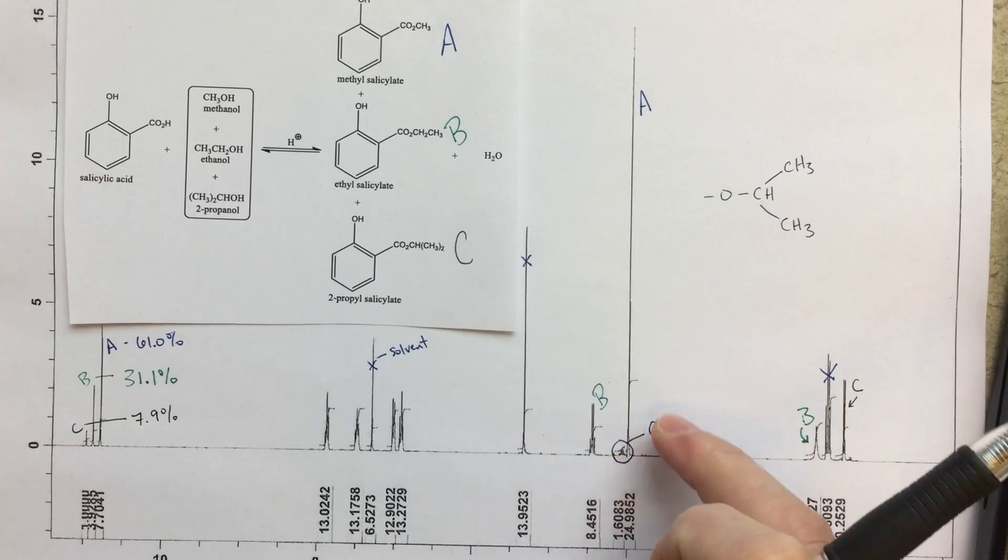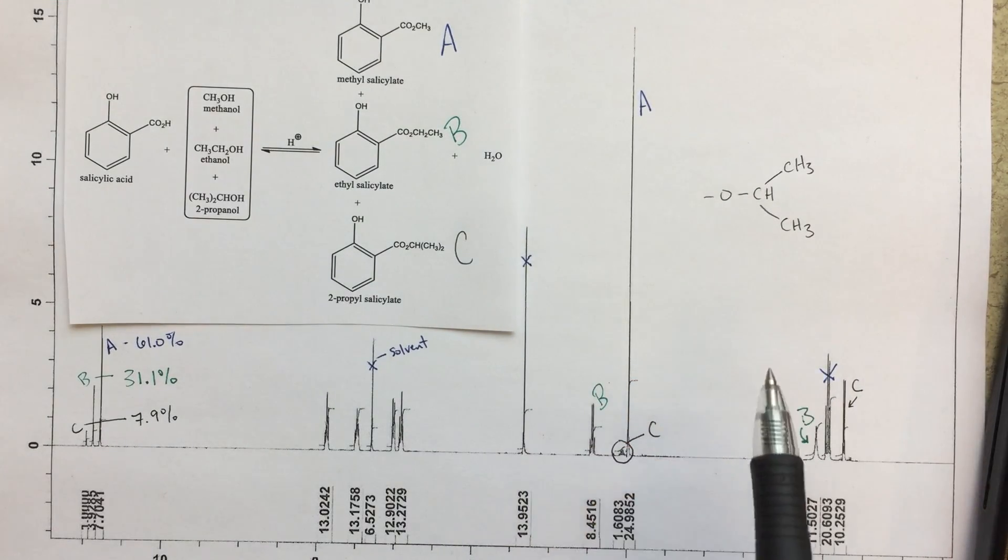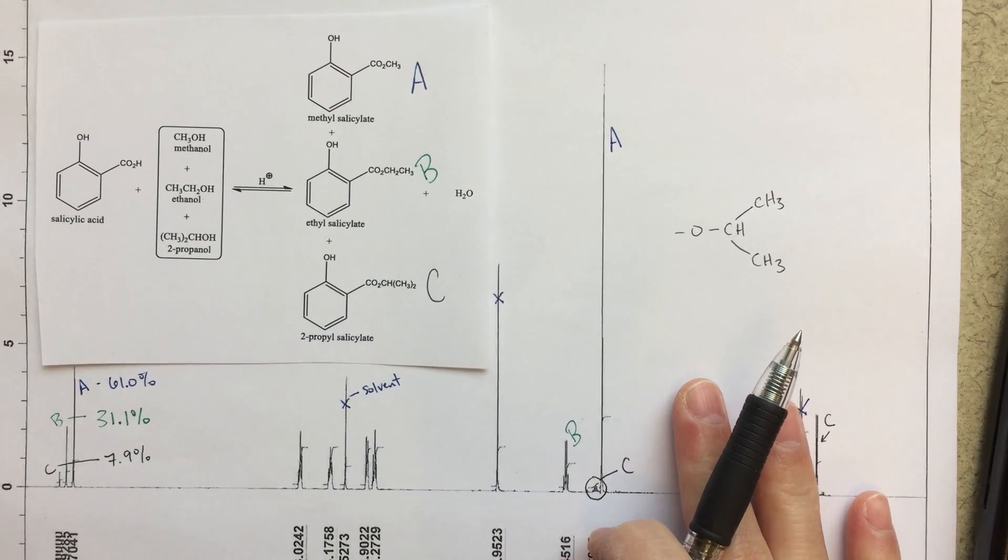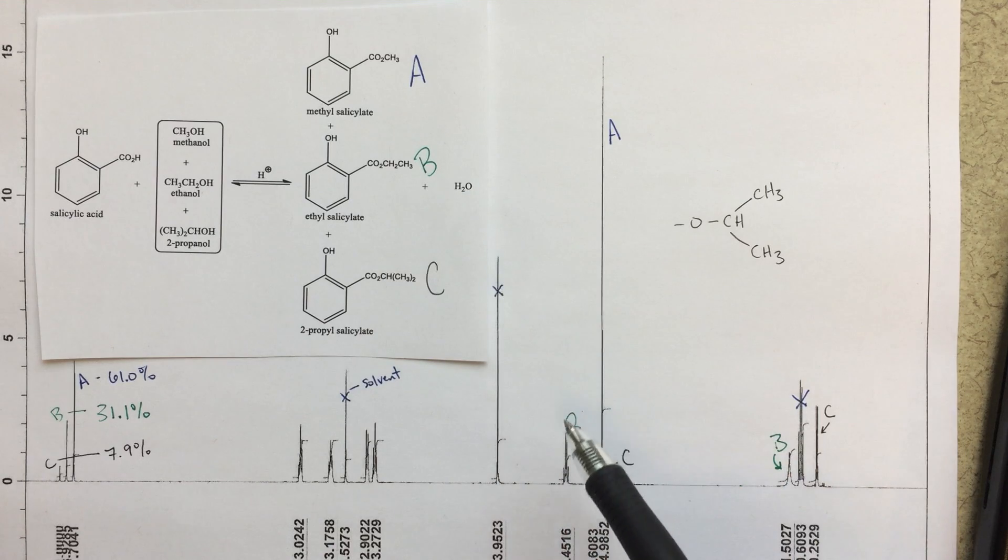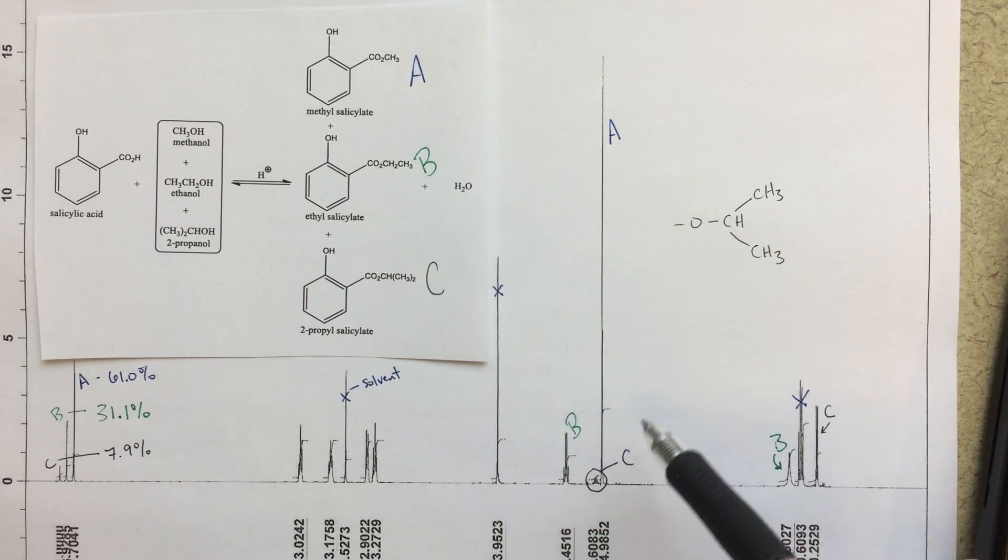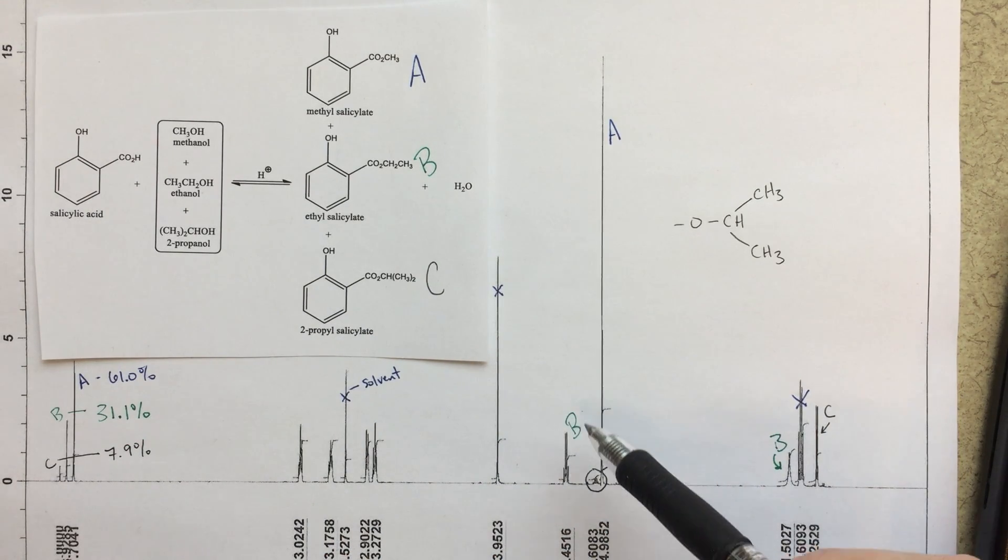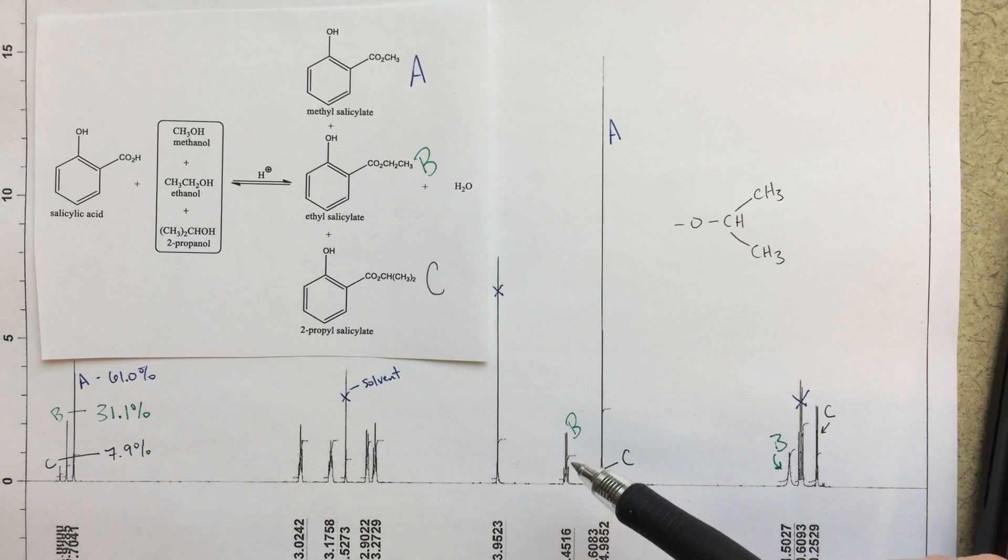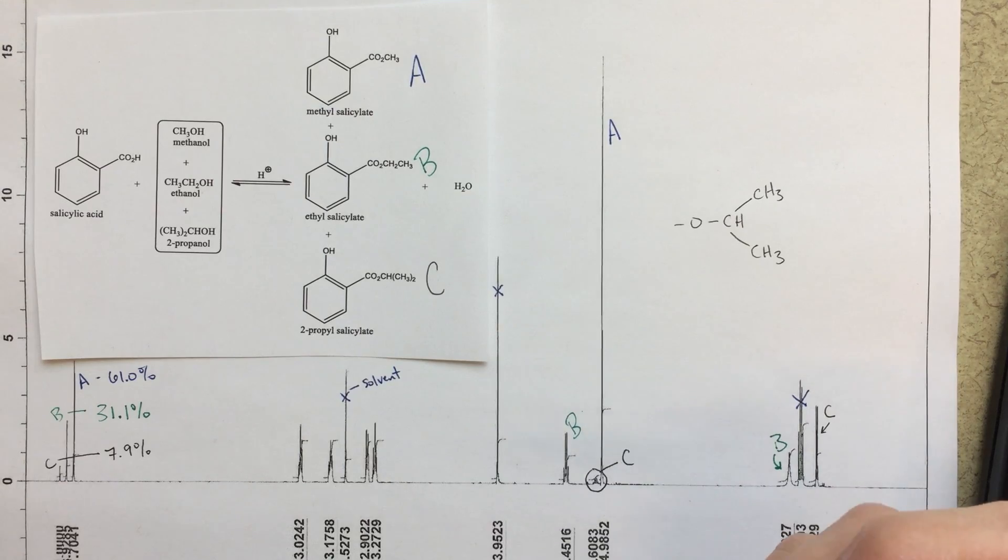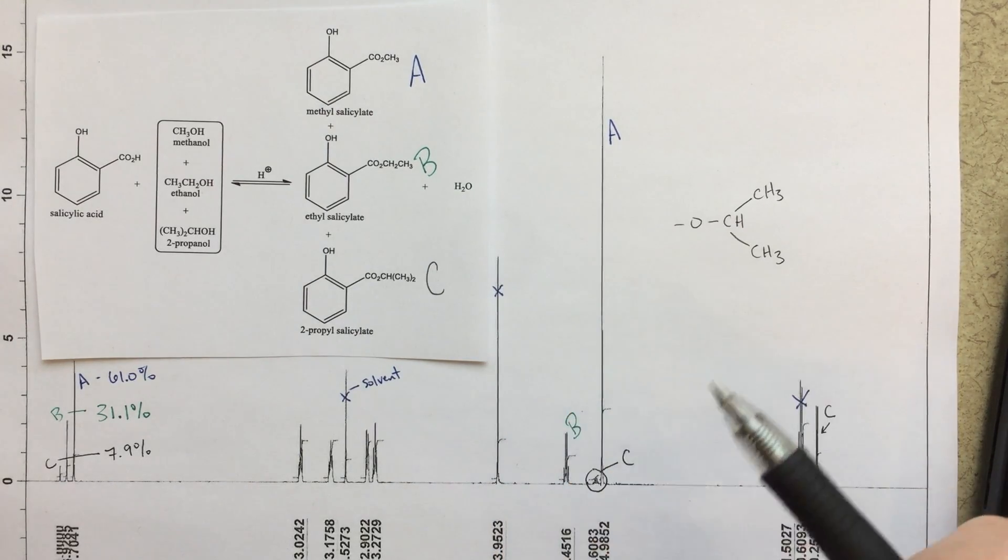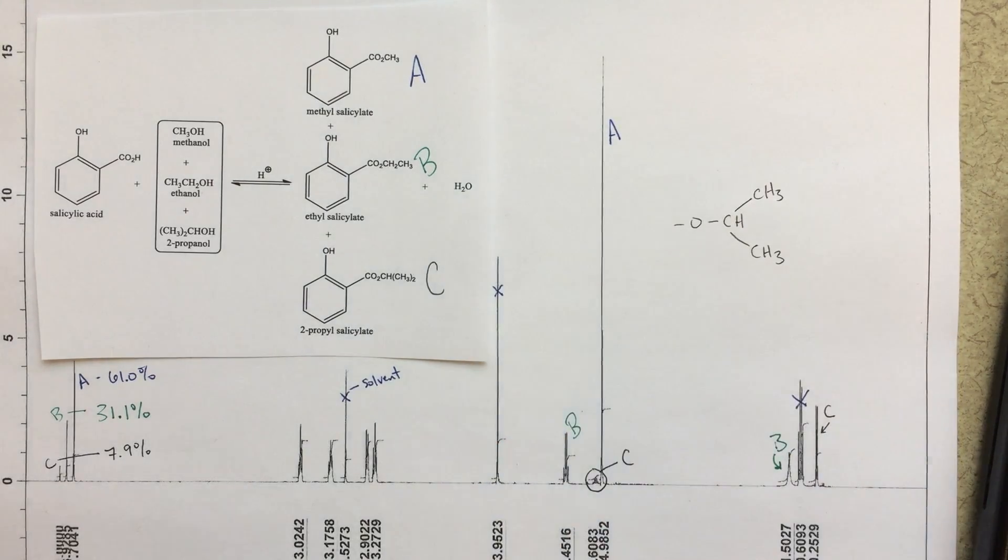Now, we could also do a similar thing for the peaks that we see in this region. So we've got more peaks that we can do similar type calculations for. So for A and B and C, we've all got peaks here. Now, what's different about doing this sort of treatment in this region is that the B peak here, that should integrate to 2 relative to A peak should integrate to 3, and the C peak should only integrate to 1.